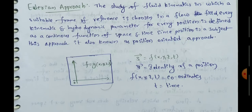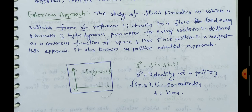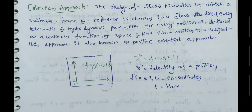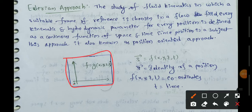In the Eulerian method, the velocity, acceleration, density, pressure, etc. are described by an observer at a fixed point in space of a flowing fluid. At that fixed point, the fluid particle's density, acceleration, pressure, and velocity are described.